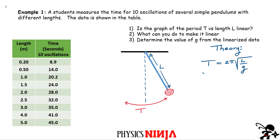Here's our first problem. A student measures the time for ten oscillations for several simple pendulums with different lengths. The data is shown here — we have the length and the time for those ten oscillations. Three questions: Is the graph of period versus length linear? What can I do to make it linear? And how do we determine the value of little g from the linearized data?